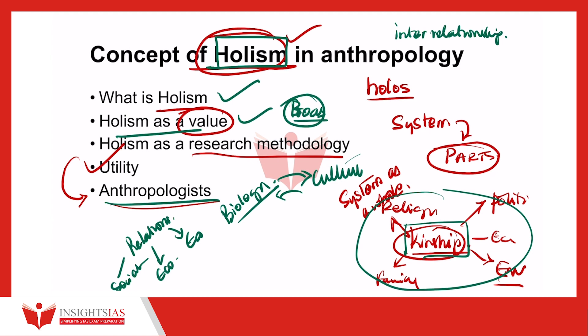You can also mention Malinowski, who studied the Trobriand Islanders through fieldwork and studied every aspect of it. You can quote the example of Kula — Kula may be studied from a ceremonial exchange point of view, but Malinowski studied it from an integrated point of view, examining its impact on religion, society, political system, etc. As holism as a research methodology, you can quote fieldwork and participatory observation, where we try to interrelate economic, social, political aspects, gender relationships, and historical factors.